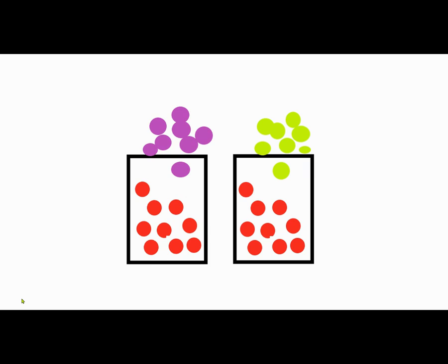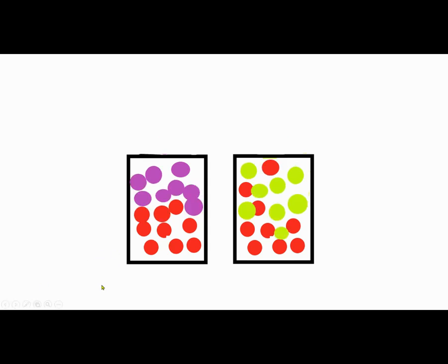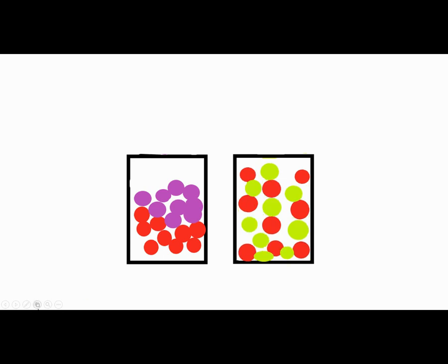On the right, the green will dissolve into the red. Notice how the green and red are now intermixed. They are all spread out. Notice how the purple and red did not intermix. They're not even.